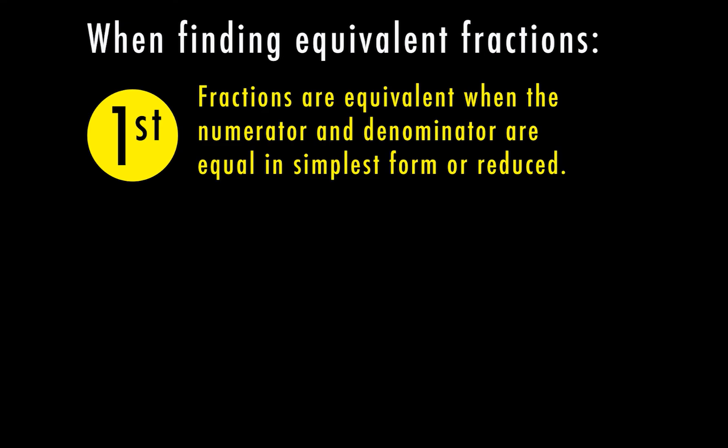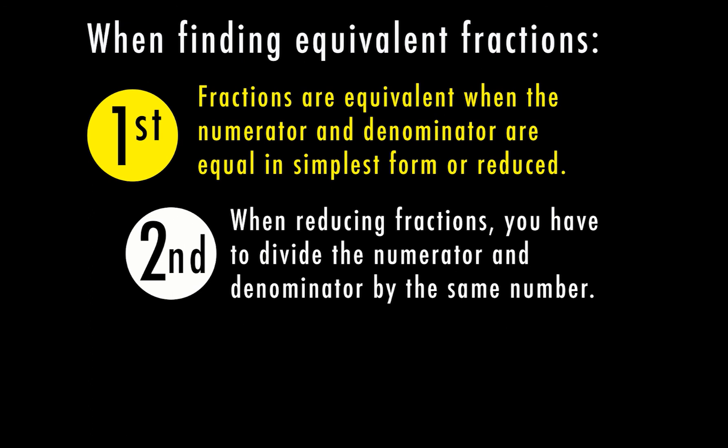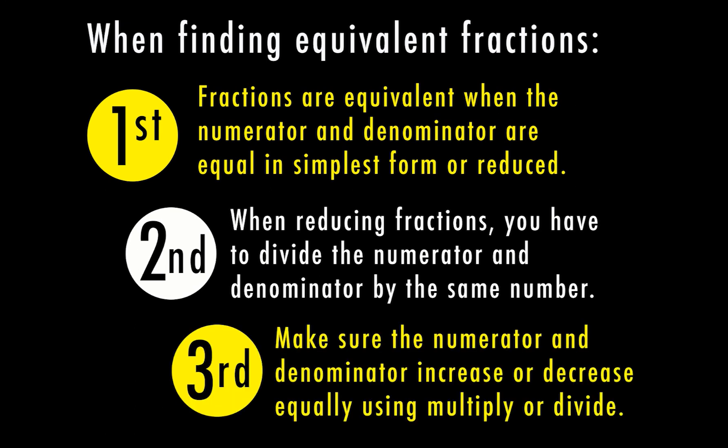Let's recap our steps. First, fractions are equivalent when the numerator and denominator are equal when they're in simplest form or reduced. Second, when reducing fractions, you have to divide the numerator and the denominator by the same number. Third, the numerator and denominator can also increase or decrease equally by multiplying and dividing by the same number. Reducing fractions means dividing top and bottom to reach simplest form, but for equivalent fractions in general, you can multiply or divide by the same number.